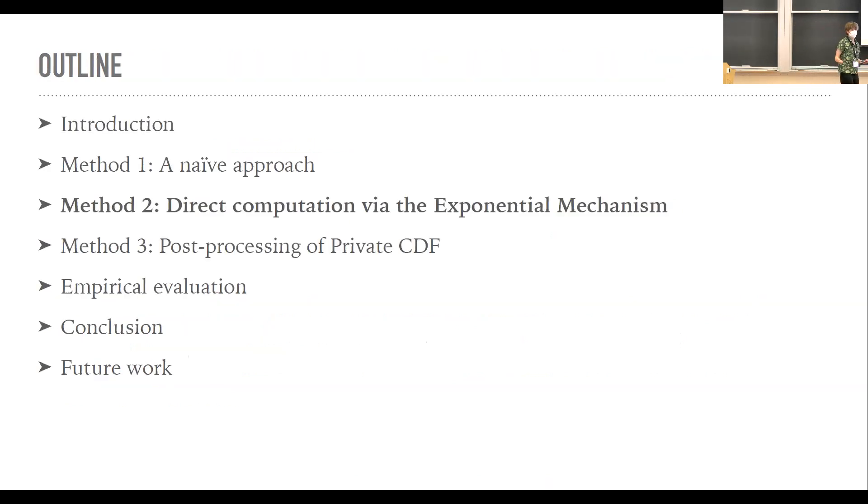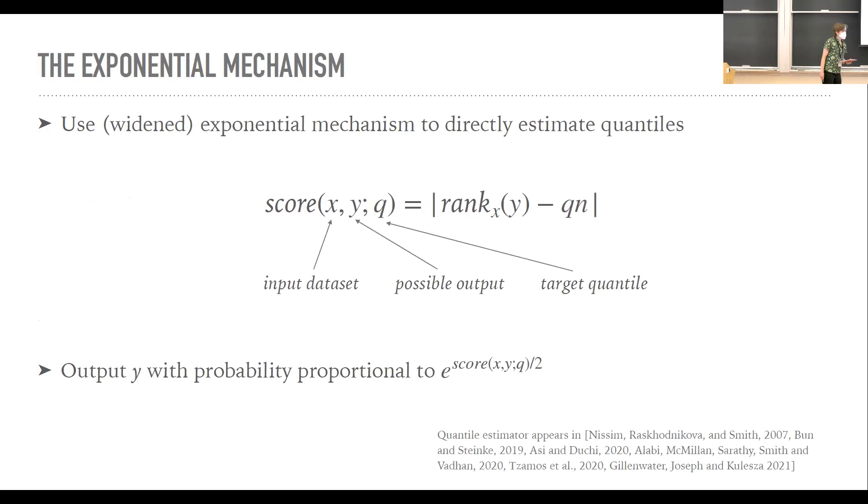So that said, I haven't actually told you any of the privacy preserving mechanisms that we thought about to do this task. There's been a lot of previous work on privacy preserving quantiles and we tried a lot of different things using previous existing techniques, techniques that we came up by ourselves. If you want to read our whole appendix, they're all there. But the two that I'm going to talk about the most because they end up being the most interesting are our good old friend the exponential mechanism and then post-processing of the private CDF.